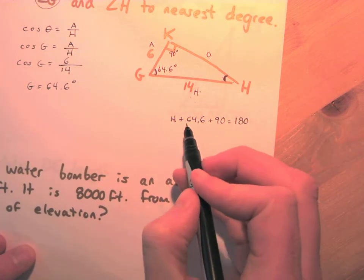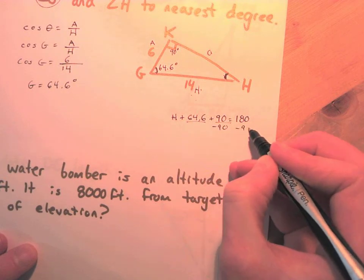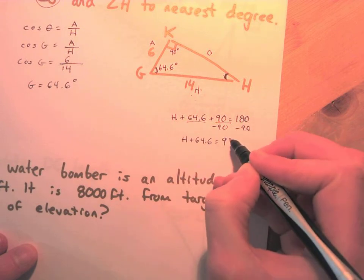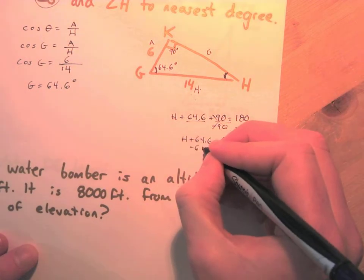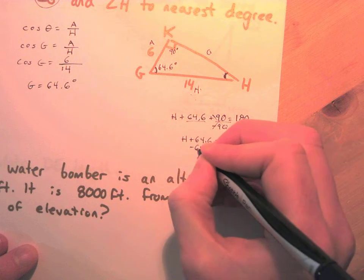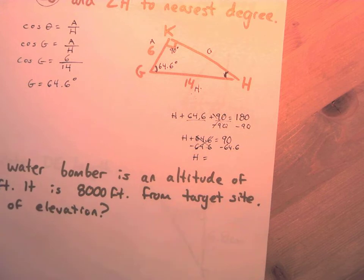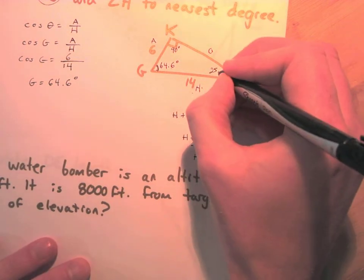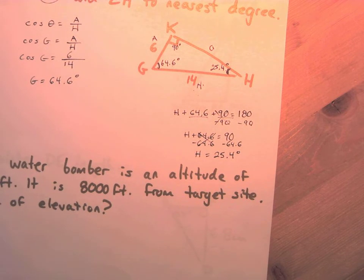To solve for H, we subtract 90 from both sides, giving H + 64.6 = 90, then subtract 64.6 from both sides: H = 90 − 64.6 = 25.4 degrees. Without redoing the trig for the second angle, we just subtracted and got 25.4. That triangle is done — we found angle G and angle H.